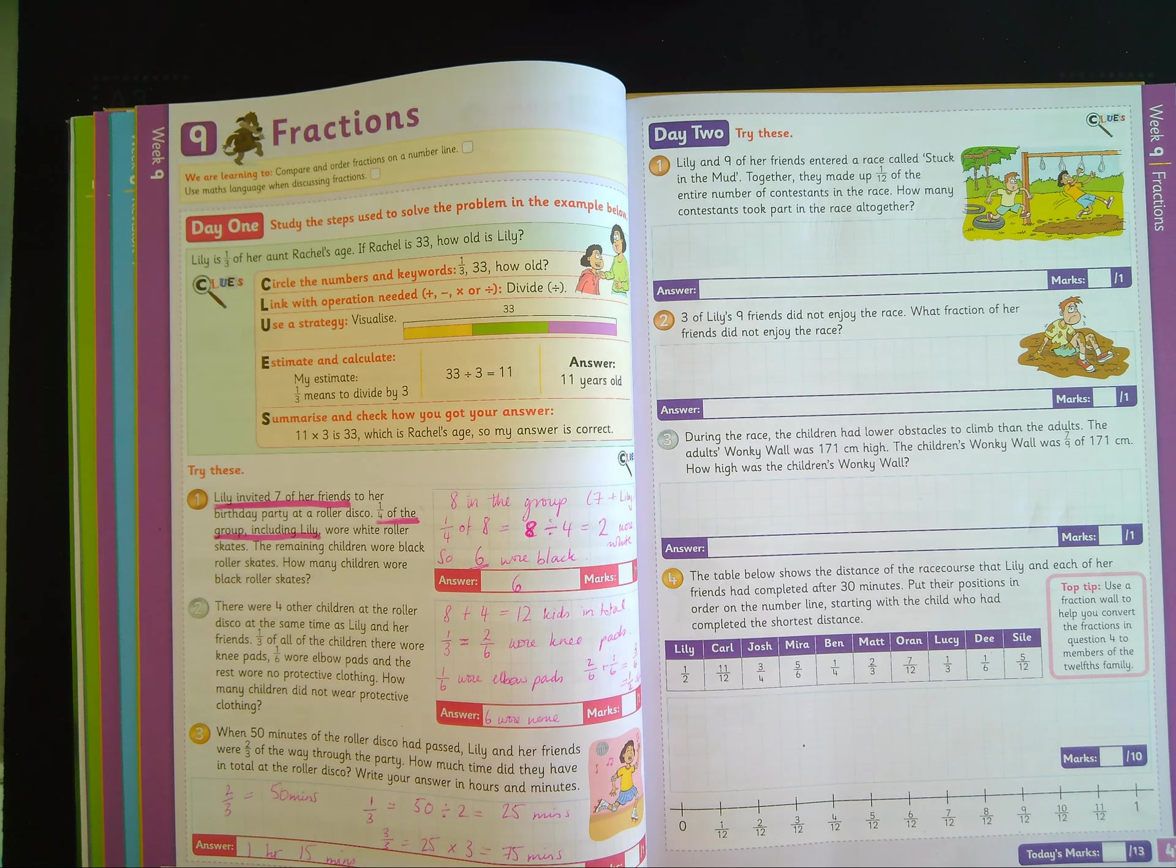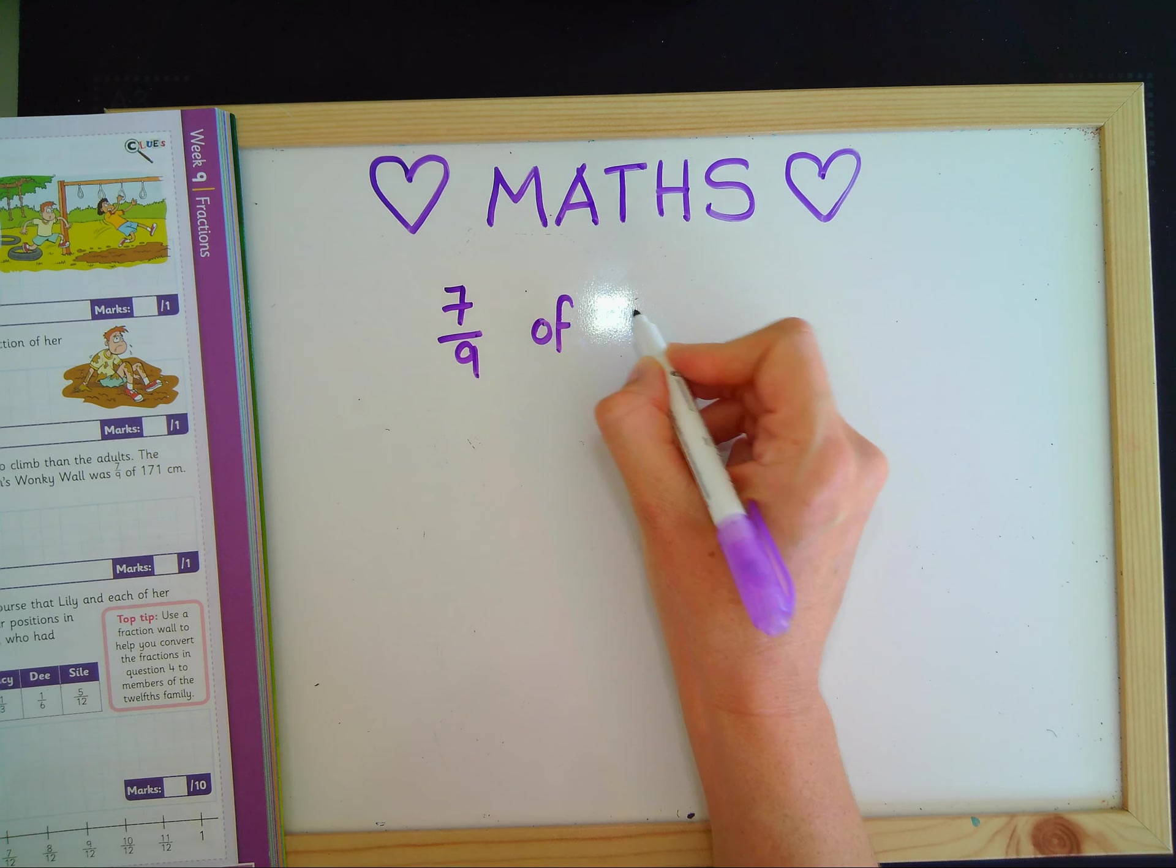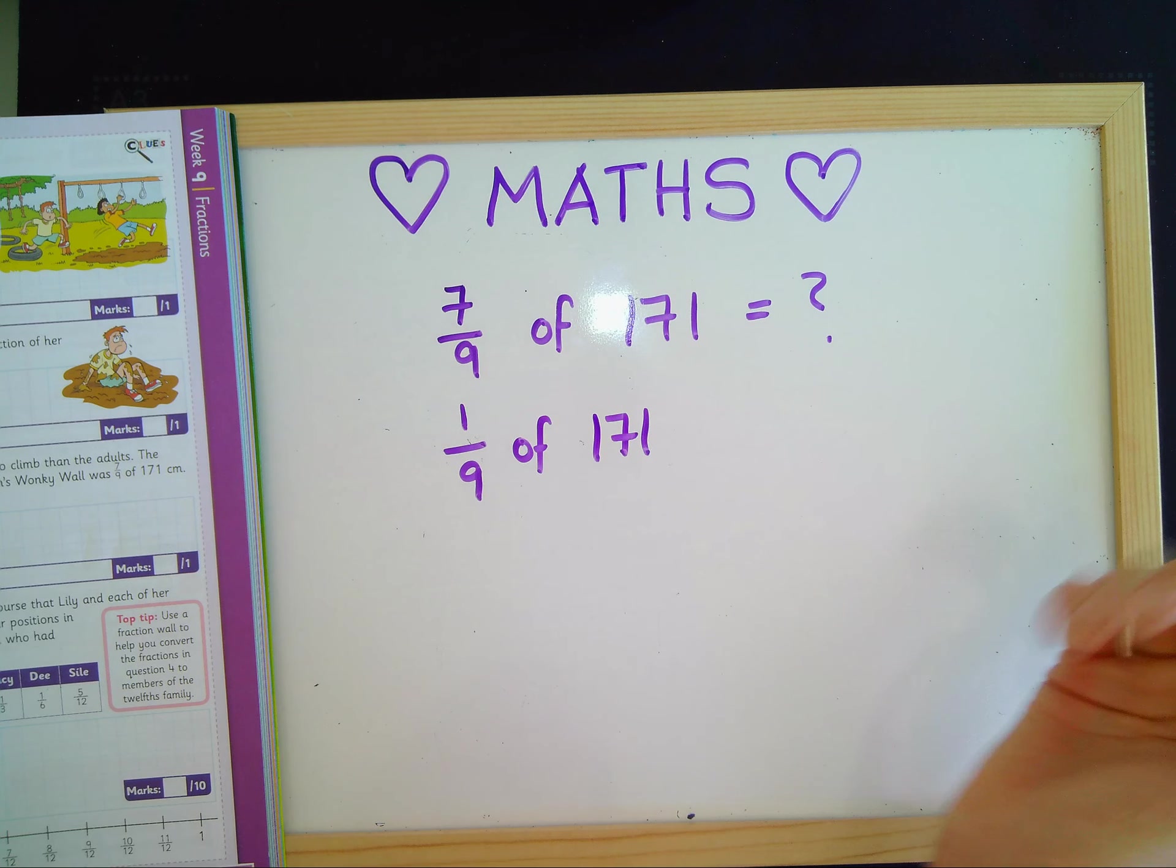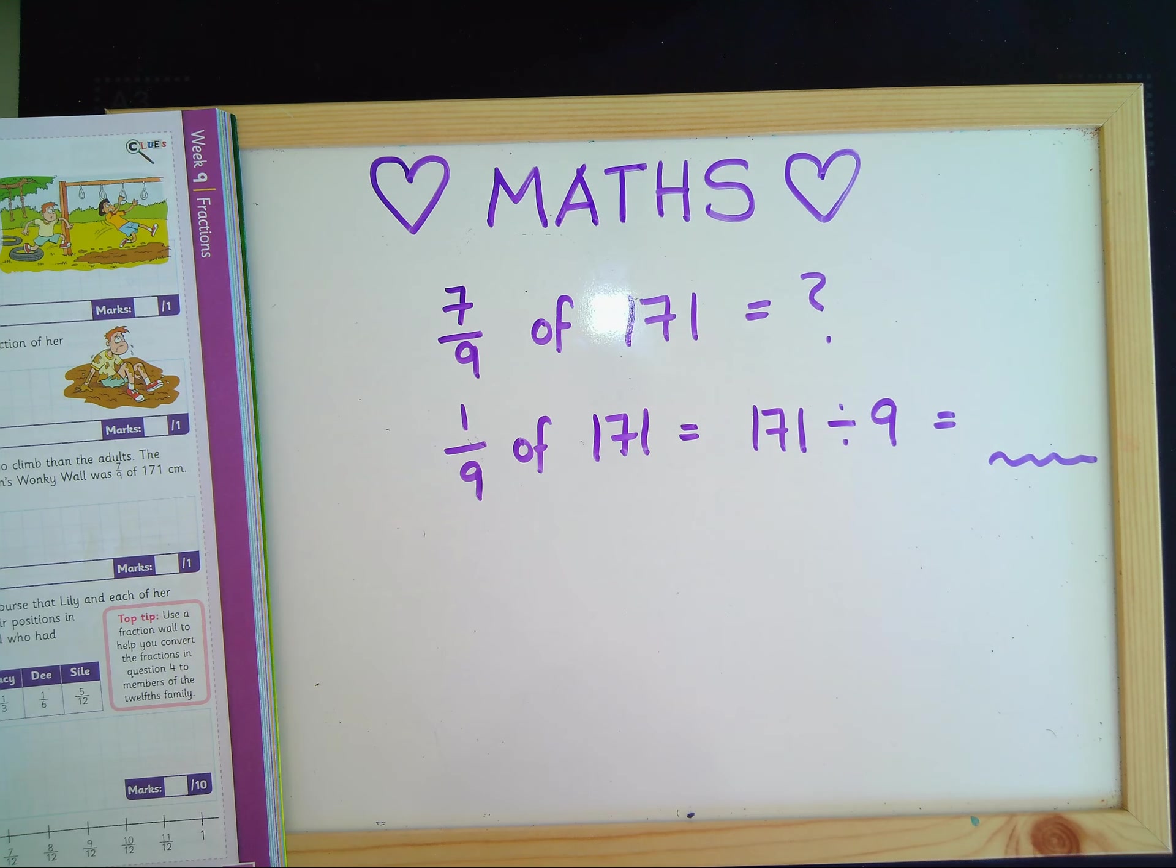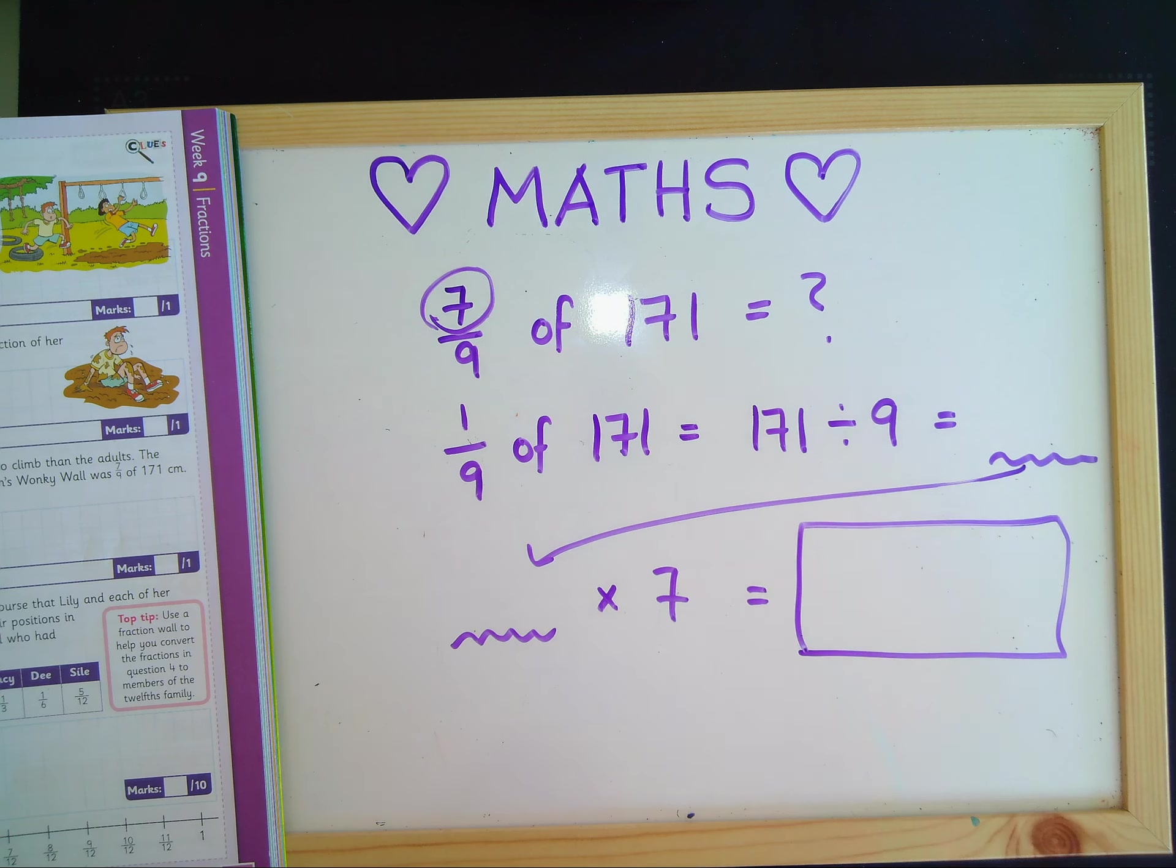So we need to find seven-ninths of 171. Before we find seven-ninths, we first need to find one-ninth of 171. So seven-ninths of 171, we're not sure. But we can find one-ninth. How do we find a ninth of a number? That's right, we divide by nine. And you'll get an answer. And then, once you know what one-ninth is, you can then multiply by seven to find out what seven-ninths is. So that answer, we'll come down here, and you'd multiply it by seven to find out the height of the children's wall.